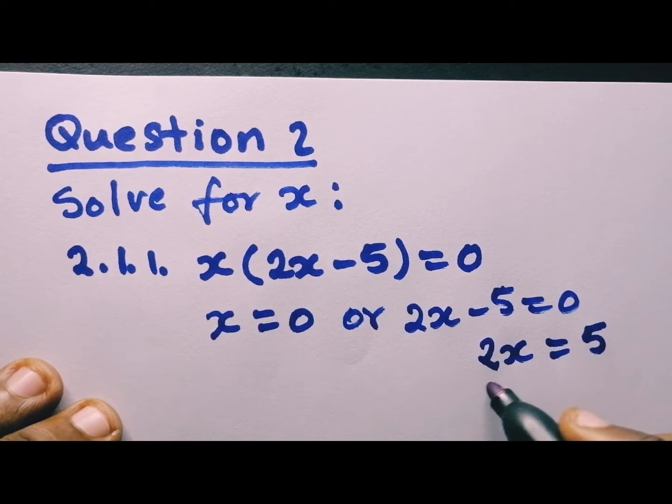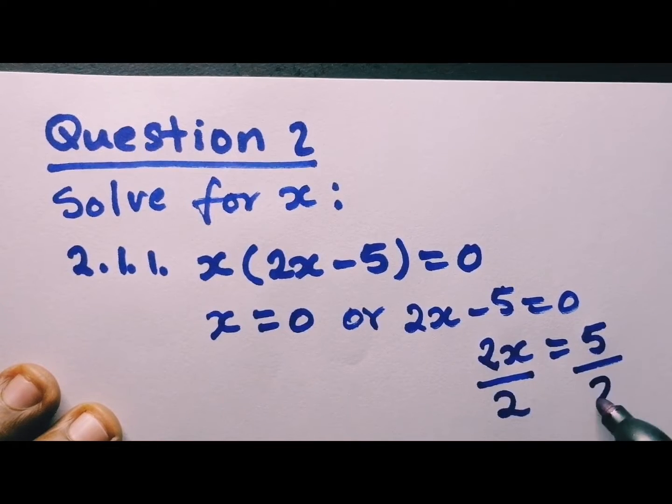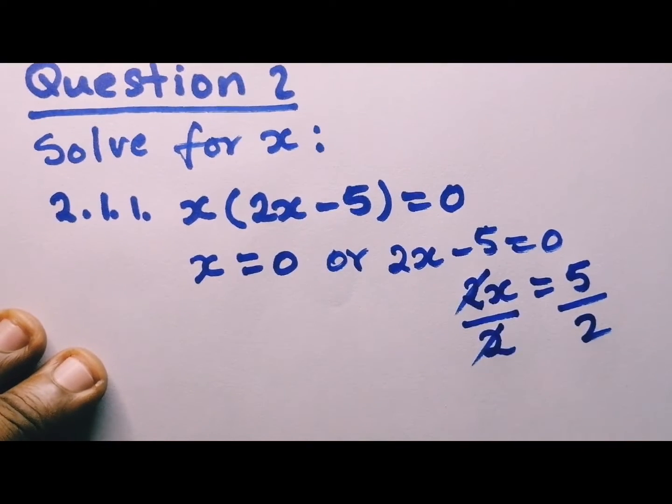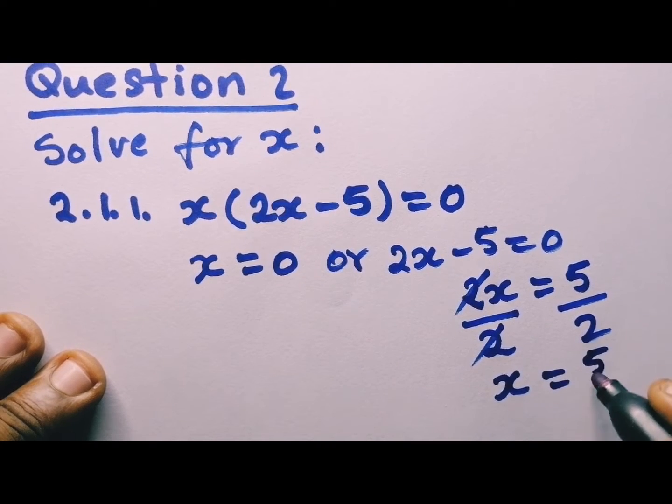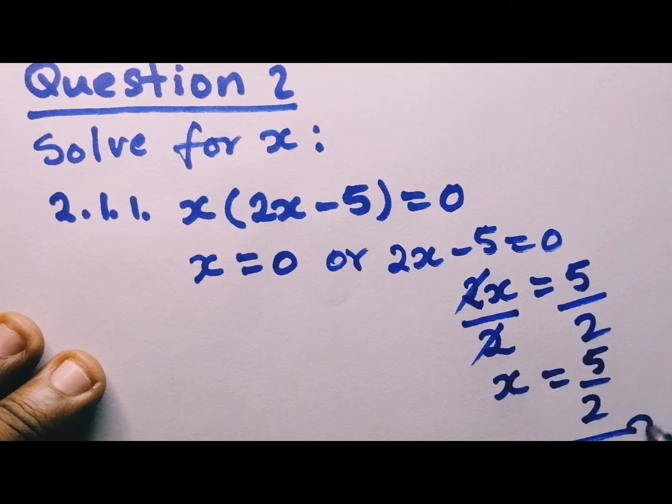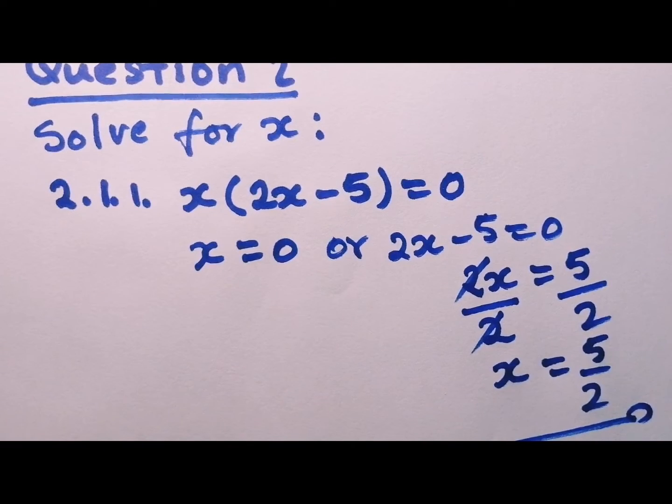And from here, remember we are solving for x. So this is going to be 2 divided by 2. So x, 2 by 2 will cancel, and then we are left with x is equal to 5 over 2. This is how you get this done. Let's check the next question.